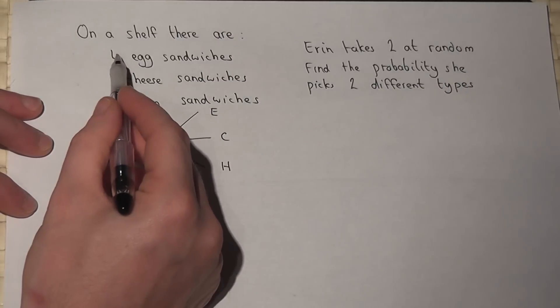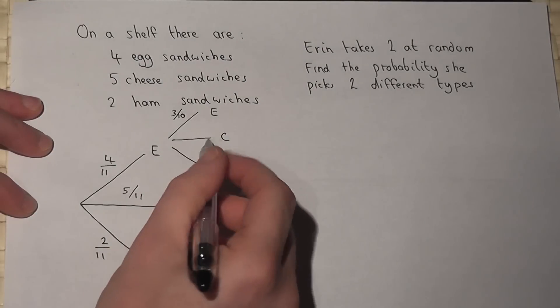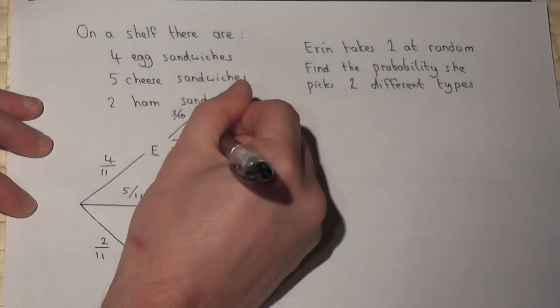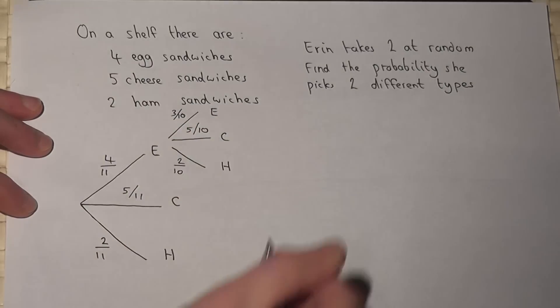So the chance of an egg now will be three out of ten. Cheese is still five, but it's five out of ten. And ham would still be two, but again two out of ten.